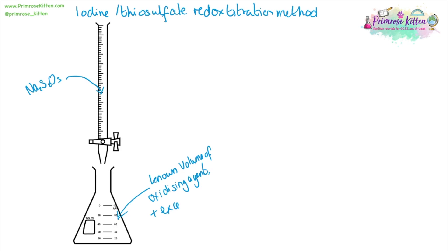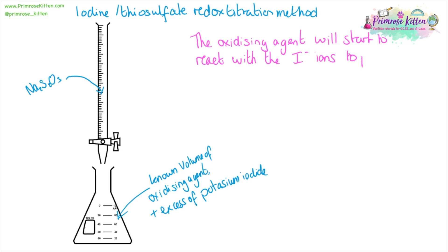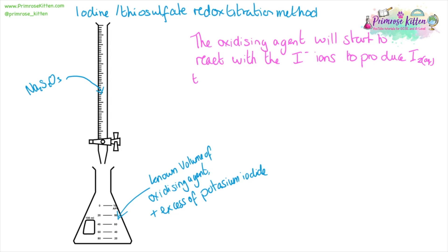We are also going to need to have in there an excess of potassium iodide. In the conical flask, you are going to have a reaction between what we are analyzing — the oxidizing agent — and the iodide ions from potassium iodide. This is going to start to produce iodine, which is going to give the solution its distinctive yellow color.